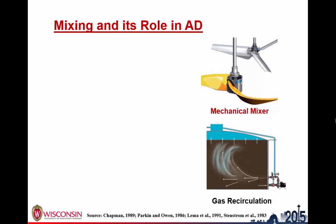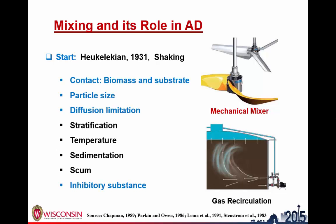The study of mixing has been investigated as early as 1931, and the first study showed that shaking can increase biogas production. Ever since then, the role of mixing has been unfolded: mixing can increase the contact between biomass and the organic substrate, reduce particle size, reduce diffusion limitation, prevent stratification, and reduce temperature gradient.